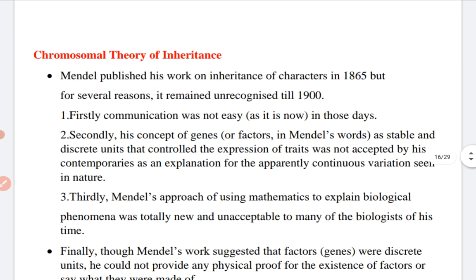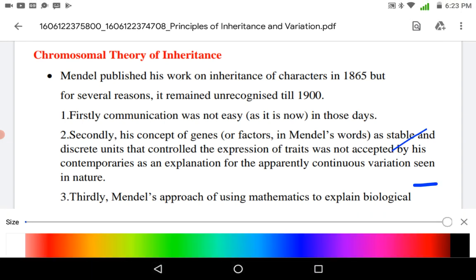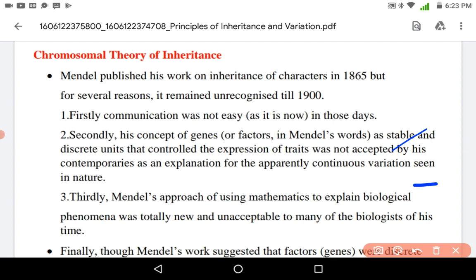The first and most important topic is Chromosomal Theory of Inheritance. As we know that Mendel published his work on inheritance of characters in 1865, but for several reasons it remained unrecognized. Firstly, communication was not so easy in those days. Secondly, his concept of genes or factors as stable or discrete units that controlled the expression of traits was not accepted. And third, Mendel's approach of using mathematics to explain biological phenomena was totally new and unacceptable to many biologists.